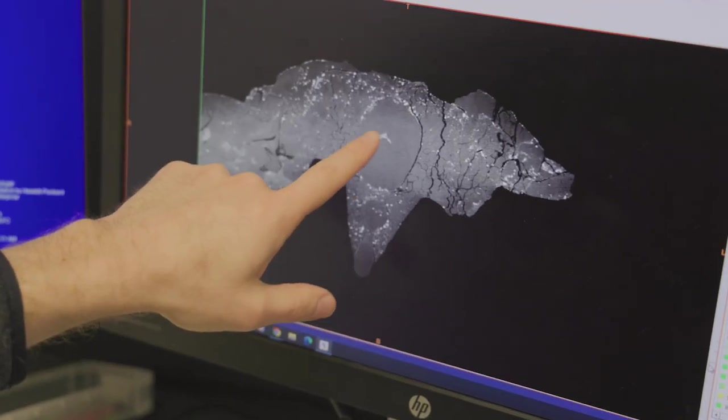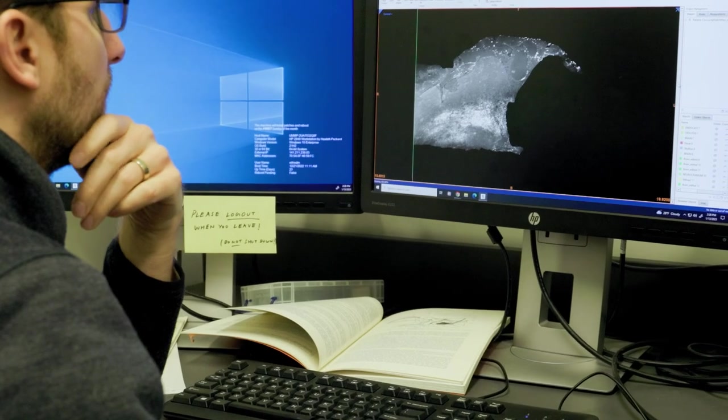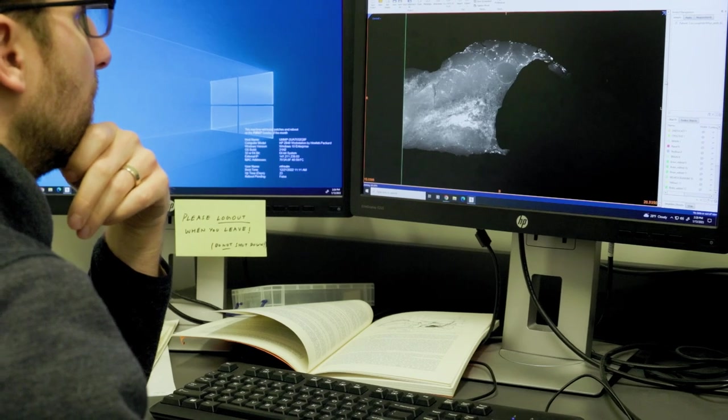But this is an early member of that group. This is a creature that branches outside of the part of the family tree that contains all living rayfin fishes. So it tells us a lot.